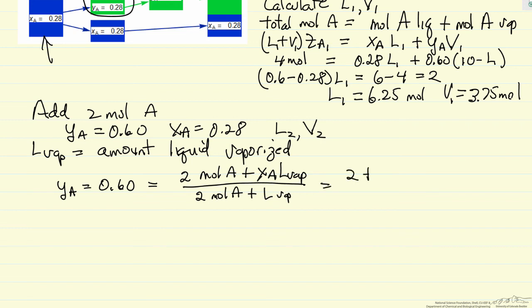Total number of moles is the two moles of A plus the total moles vaporized. This is just two plus 0.28 times the moles vaporized over two plus the moles vaporized. We can just rearrange and solve for the moles of liquid vaporized. It turns out it's 2.5 moles.